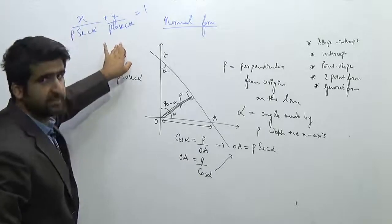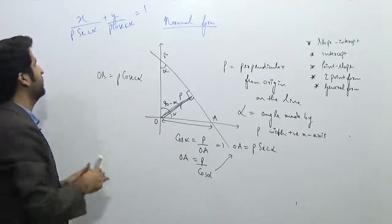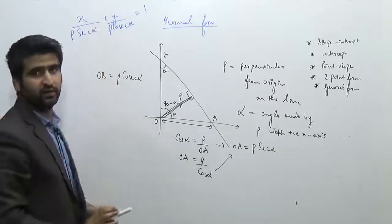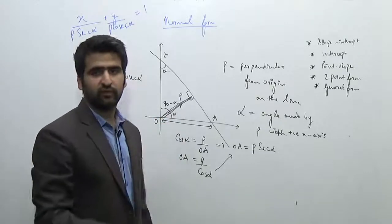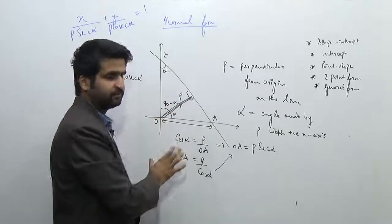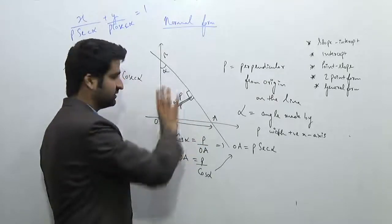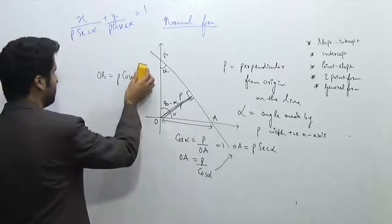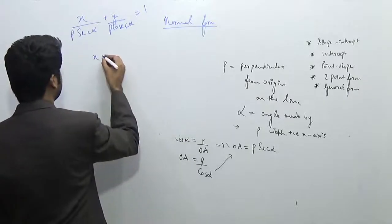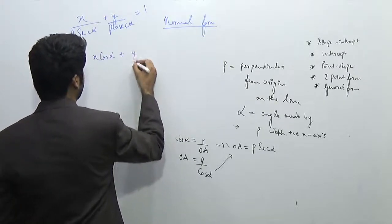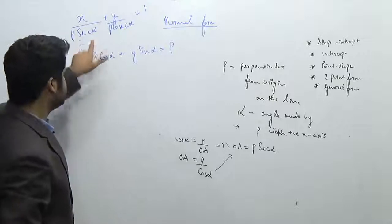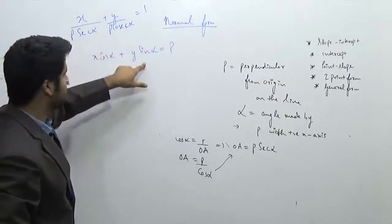x upon x-intercept plus y upon y-intercept equals 1. A common confusion is linking x with sin α, but x goes with cos α here. The reason behind this is the resolution of vectors, which we already studied in physics. If we put the components of p, this equation simplifies by taking LCM: 1 / sec α = cos α and 1 / cosec α = sin α, so the final equation comes out to be x·cos α + y·sin α = p.